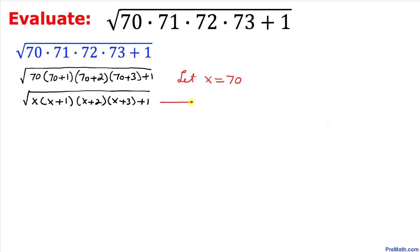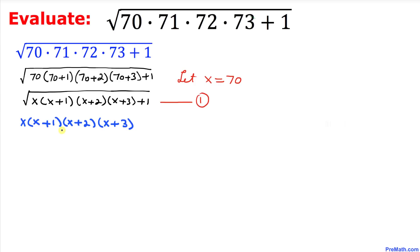Now let's focus on the inside of the radical. I've copied it down here: x times (x+1) times (x+2) times (x+3). Let me rearrange them — I can write this as x times (x+3), and then times (x+1) times (x+2).